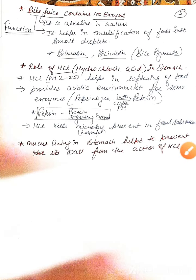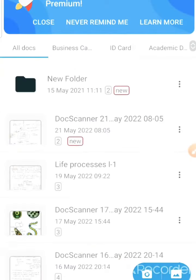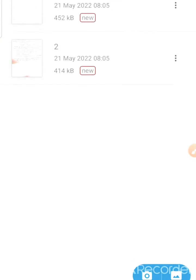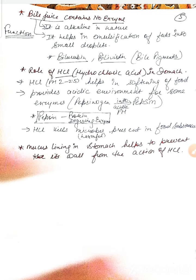Liver is the biggest digestive gland and secretes bile juice. Bile juice does not have any enzyme. It is alkaline in nature and helps in emulsification of fat into an easily absorbable form.